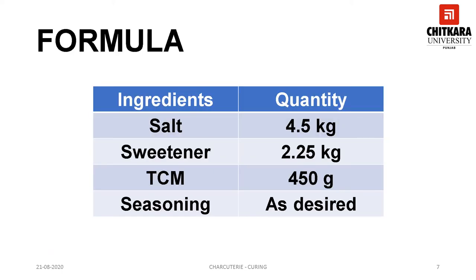This slide shows a formula for preparing a dry curing mix for meat, which comprises salt, sweetener, TCM, and seasoning. To get a good quality cured product, one needs to adhere to the quantities as given in the table.